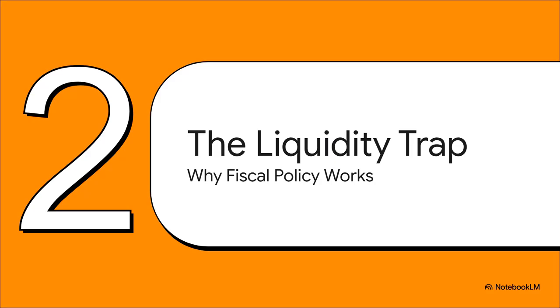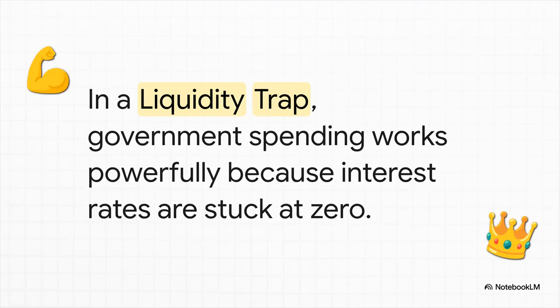Let's dive into scenario number one. We are deep in the liquidity trap. If you're thinking about your IS-LM model, this is the flat, horizontal part of the LM curve. And what does a flat line mean? It means the interest rate is stuck — it is not going anywhere, no matter what. And here's the headline for this scenario, the big takeaway: in a liquidity trap, fiscal policy is king. Government spending becomes incredibly powerful.